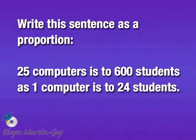Now let's go slowly. '25 computers is to 600 students' — that is one ratio or rate, so we write that in fraction form. Then 'as' stands for equals in our proportion, so 'as' translates to equals.